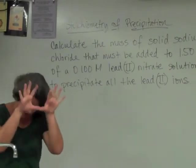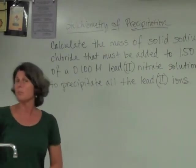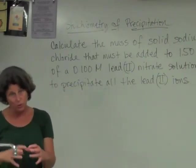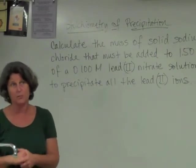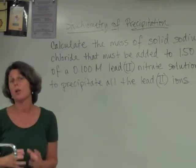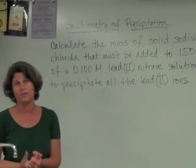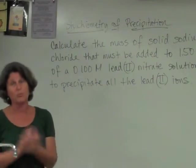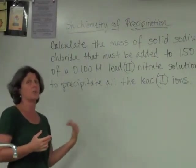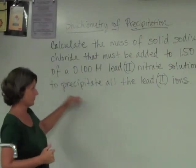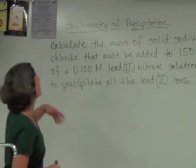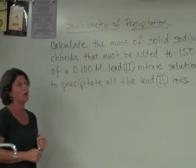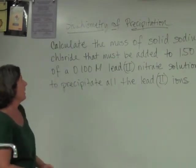Precipitate them out so that they fall to the bottom. We can then pour off all the solution knowing that our lead(II) is all bound up in a precipitate at the bottom. And then we've got this small amount of solid that we need to dispose of. But that's a whole lot better than having one and a half liters of a liquid that we can't pour down the drain. So that would be a context in which we might want to do this problem. So we need to know how much sodium chloride we need to add to it to get all of those lead(II) ions precipitated out of solution.